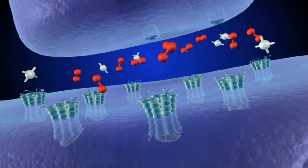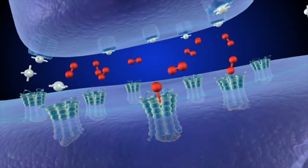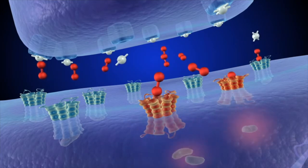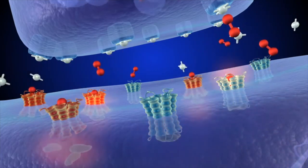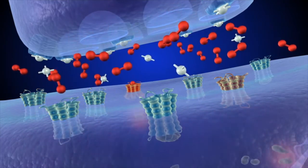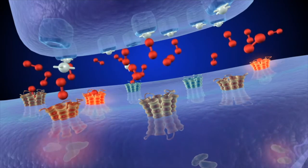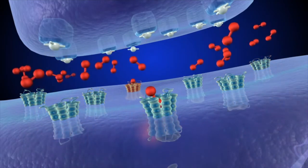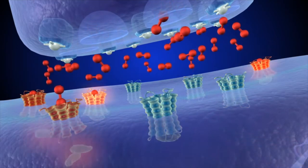When someone first uses cocaine, the drug quickly enters the brain, where it blocks the transporters on the presynaptic cell. Since dopamine cannot re-enter the presynaptic cell, it begins to accumulate in the synapse, where it can reach abnormally high levels and remain there much longer than usual. The post-synaptic cell becomes hyperactivated.